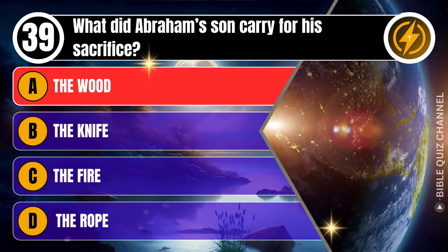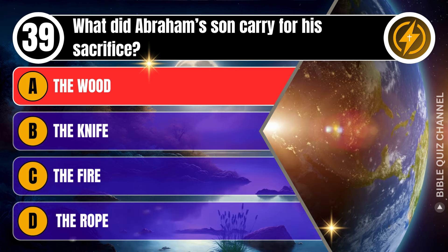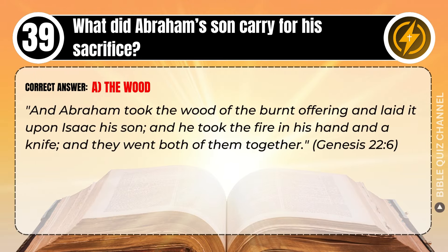Correct answer: A. The wood. Explaining the Bible — And Abraham took the wood of the burnt offering and laid it upon Isaac his son, and he took the fire in his hand and a knife, and they went both of them together. Genesis, chapter 22, verse 6.